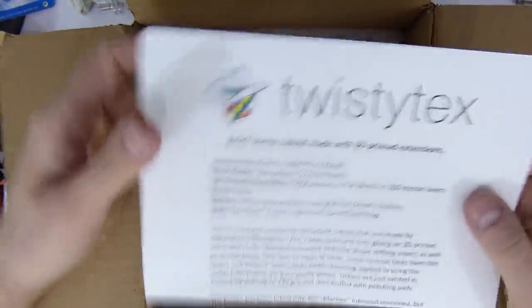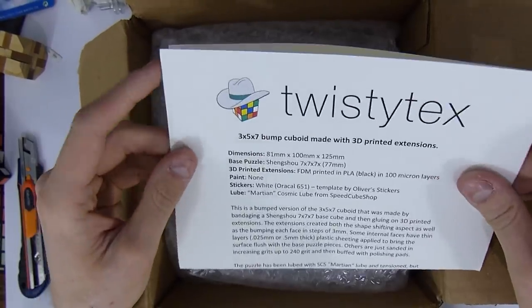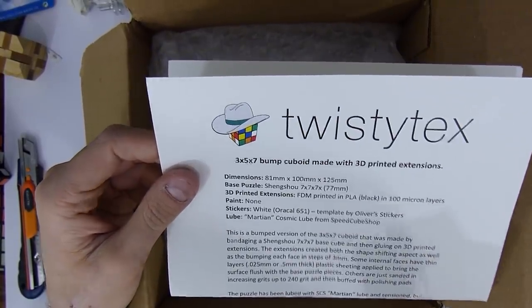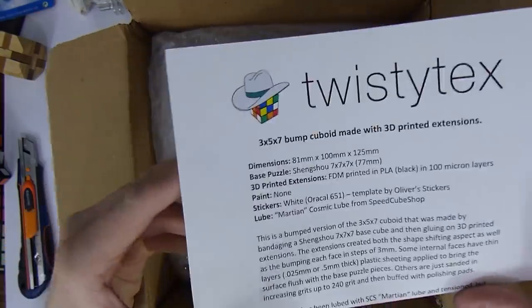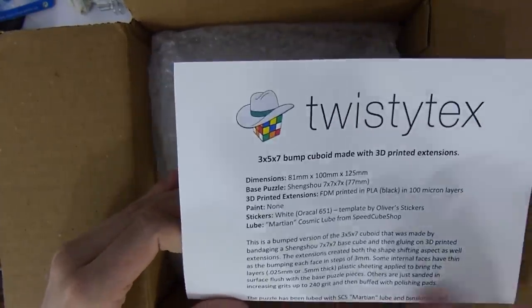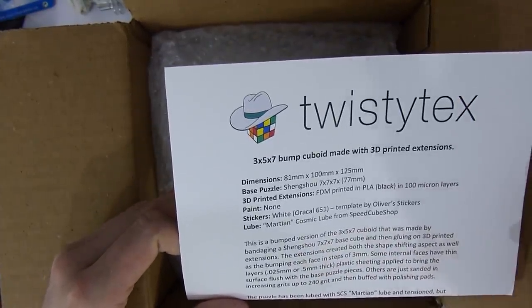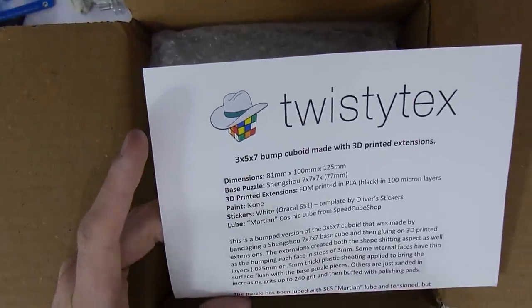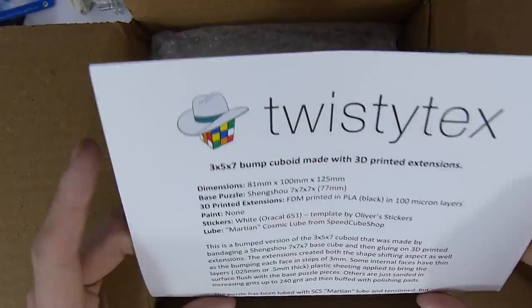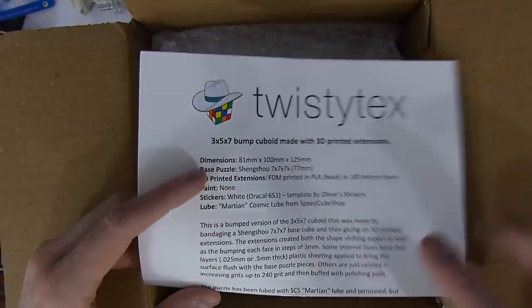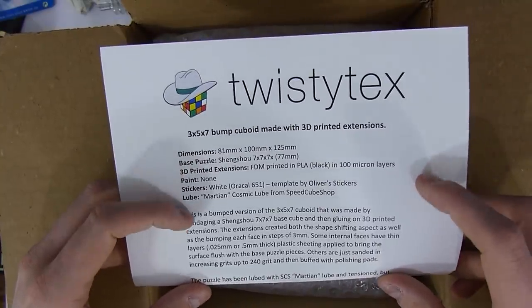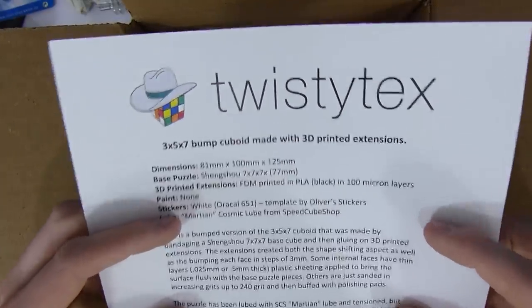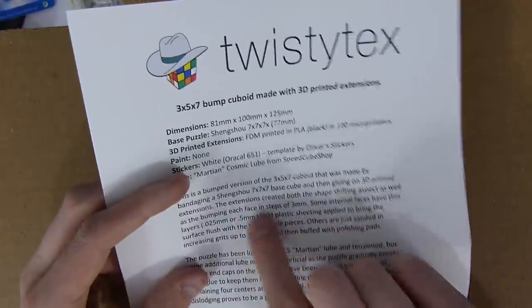So, 3x5x7 bump cuboid. The reason he sent me this is because I was the first one to make a 3x5x7 in the first place. Mine was 3D printed, though. This one is technically also 3D printed because it's extensions on a Sheng Shou 7x7. This is a bumped version of the 3x5x7 cuboid made by bandaging a Sheng Shou 7x7 base cube and gluing on 3D printed extensions, as I said.